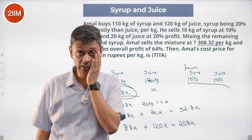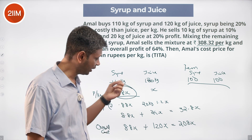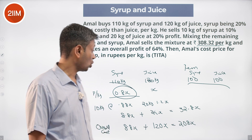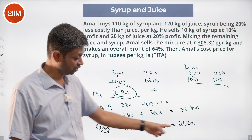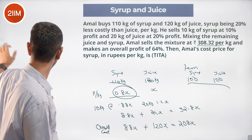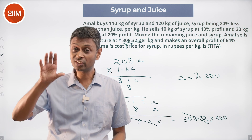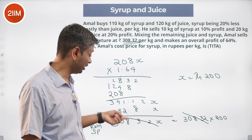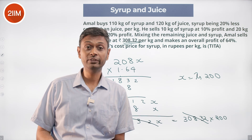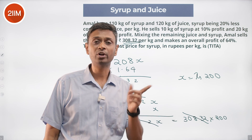Going over this one more time: cost per kg is 0.8X for syrup and X for juice. Total quantities are 110 and 120 kg. Ten kilograms sold at 10% profit, twenty kilograms sold at 20% profit. Total cost is 110 into 0.8 plus 120 into X, which is 208X. Total selling price is 208X into 1.64. First thirty kilograms gives 32.8X; remaining 200 kg sold at 308.32 per kg. The 308.32X on both sides cancels, giving X equals 200 and syrup cost equals 160 rupees per kilogram.